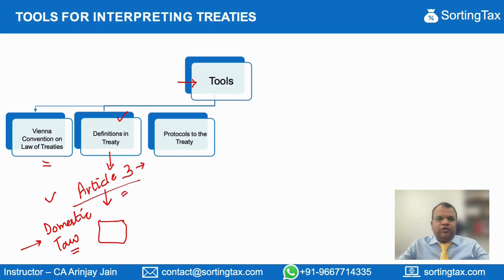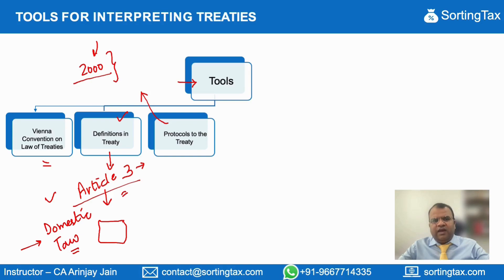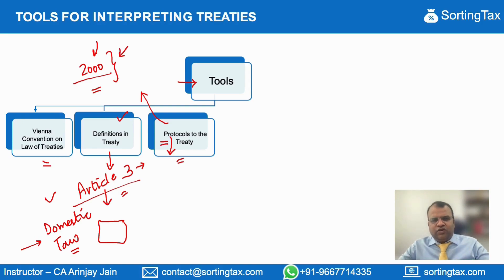Protocols to the treaty. A protocol to the treaty is something that — let's say if you enter into a tax treaty in 2000, and then there's a change in law, or there's a requirement that certain provisions require additional clarification — the two countries can get together and clarify the meaning of those terms or replace some of the existing provisions of the treaty by adding protocols. These protocols can be amended from time to time. So instead of amending the whole treaty, there is a protocol, which is kind of an annexure or amendment document to the main treaty.